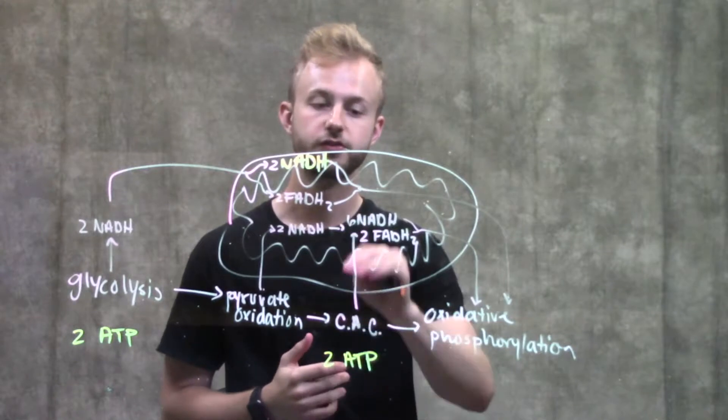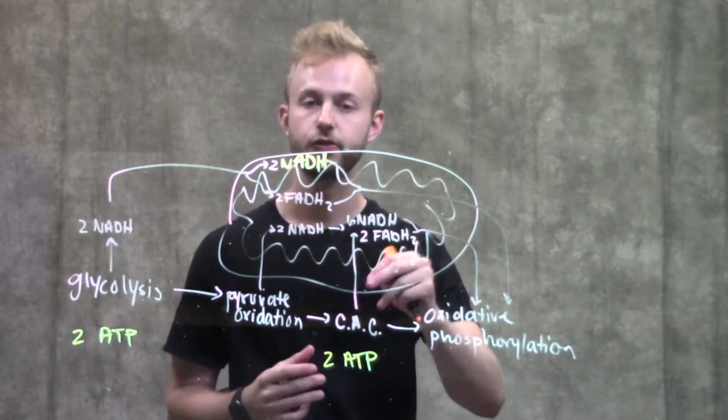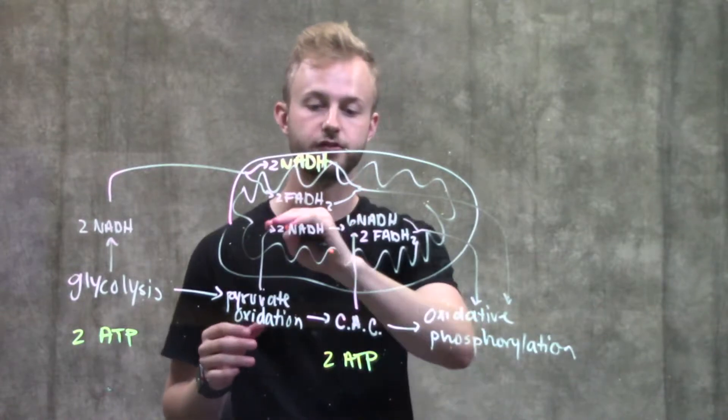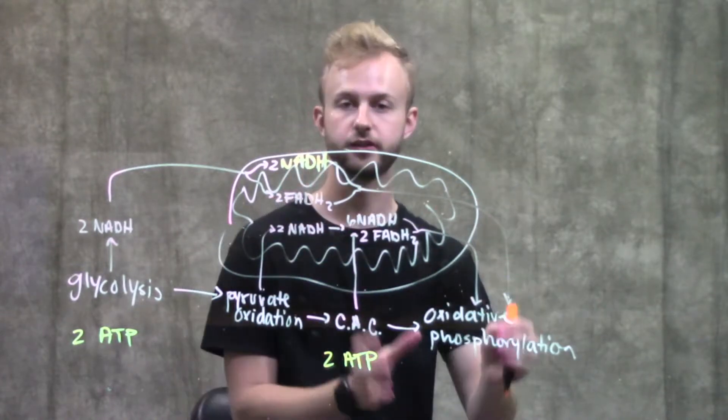The citric acid cycle also produces six NADHs and two FADH2s from each molecule of glucose, and we're going to send all of that to the electron transport chain.